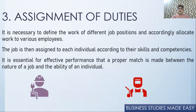Then comes assignment of duties. In production department number 1 there are 50 workers — now who is going to do what work? The worker will keep waiting for the supervisor unless the supervisor comes and tells them: 'You go and start working on machine number 8, you go to machine number 5.' While allocating work to subordinates, you must ensure the work is according to their skill and competency — only then will they give their maximum. So the third step is assignment of duties.